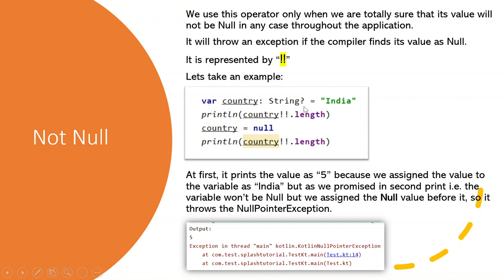So for example, where country is equal to India of type String, which can be null. Then in the second statement, if we print the value of its length, it will print as 5. But in the next statement, if we assign country as null, and then another time we are printing its value with the operator not null, it will throw an exception as null pointer exception.